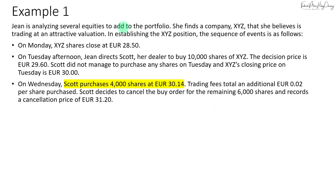Under scenario one, we have Jean who is analyzing several equities to add to the portfolio. She finds company XYZ that she believes is trading at an attractive valuation. Establishing the XYZ position, the sequence of events is as follows. On Monday, XYZ shares closed at 28.50 euros. On Tuesday afternoon, Jean directs Scott, her dealer, to buy 10,000 shares of XYZ at a decision price of 29.60. Scott did not manage to buy any shares on Tuesday, and XYZ's closing price on Tuesday is 30 euros.